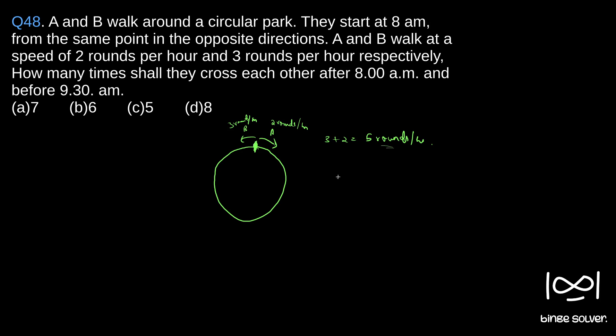So we know that. Between 8 to 9:30, if you see 5 rounds per hour, 30 minutes is there, so half, 2.5 times they cross.